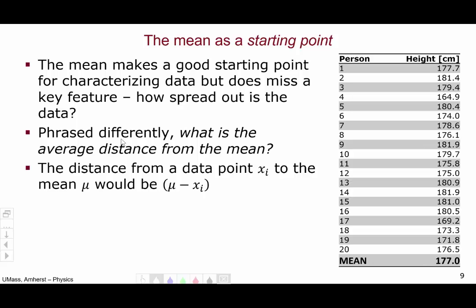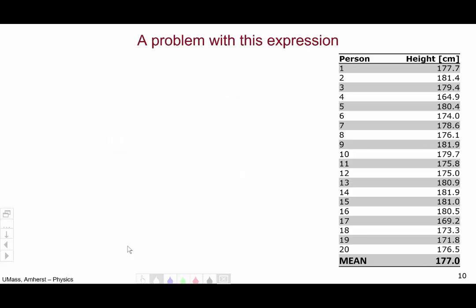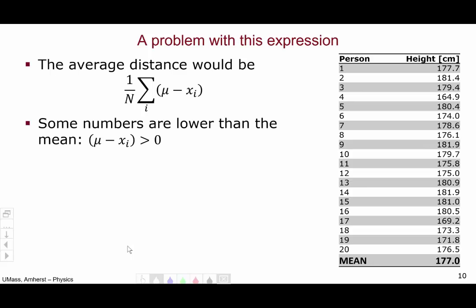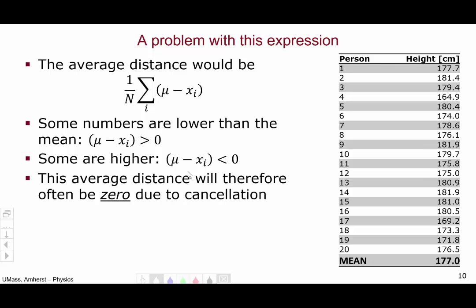Well, the distance from a given data point xi to the mean would be the mean minus xi. And the average distance would be, well, take all of these different distances, mean minus xi, add them all up, and divide by the number of measurements. However, this idea has a problem. Some distances are lower than the mean. For example, person 6 is slightly shorter than our average, so his distance to the mean will be positive. While some people are taller than the average, for example person 2, so their distance to the mean will be negative. If I add up positive numbers and negative numbers, I'll probably get a result that's very close to zero due to the cancellation.